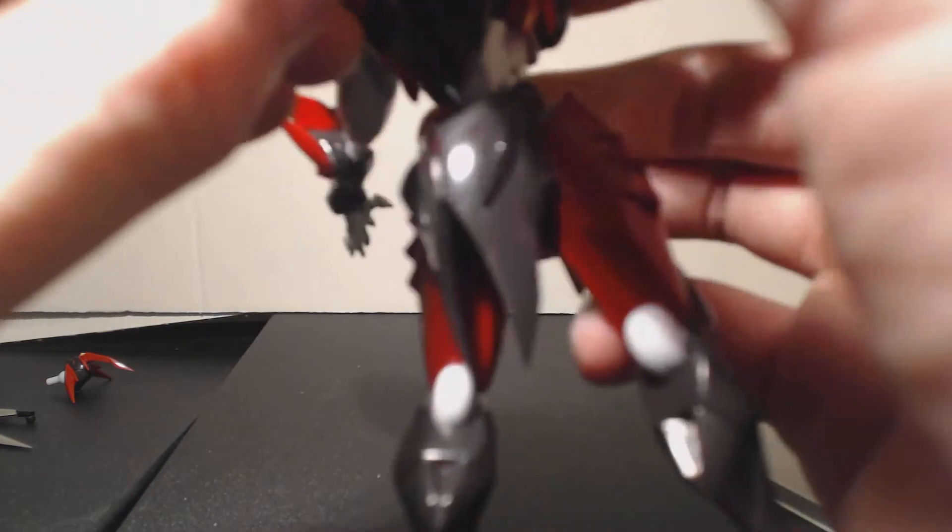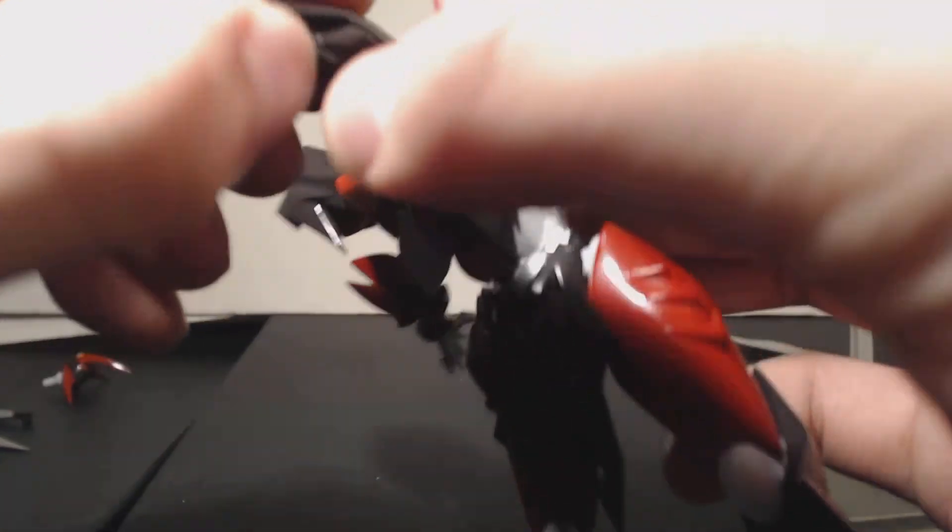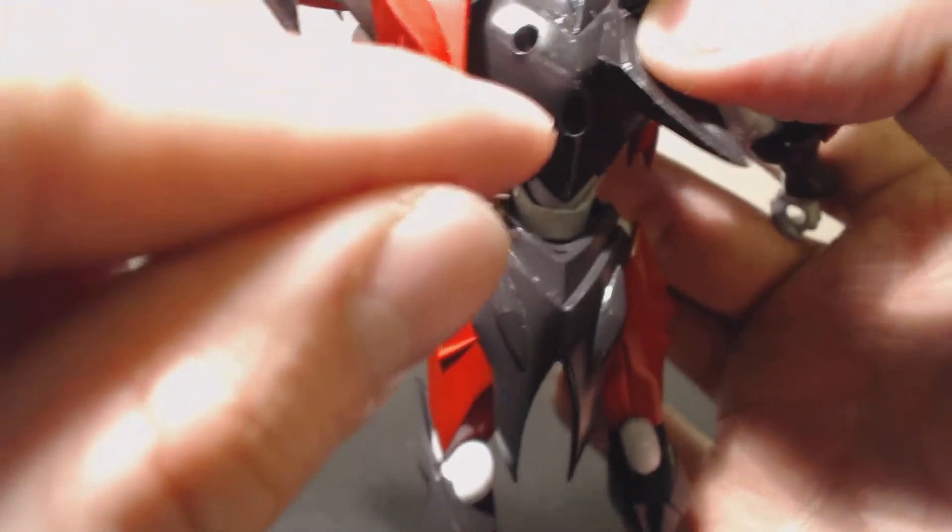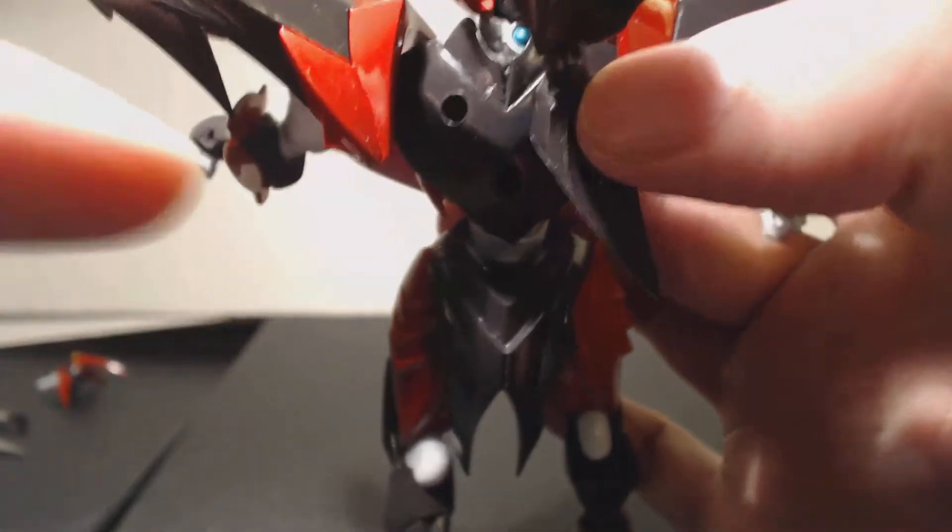So these wings are actually articulated. You can move them up, you can close them like that, or you can open them like so. And they pretty much peg into the unit itself. So you see the peg hole there.